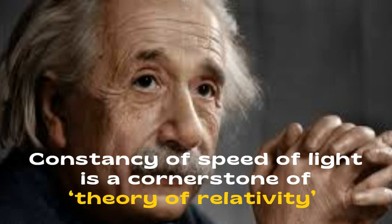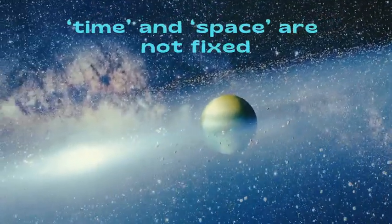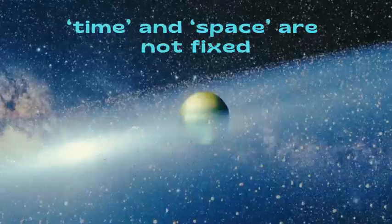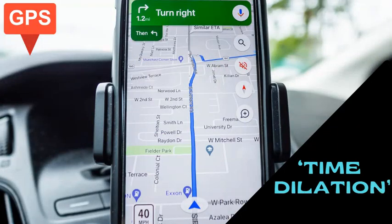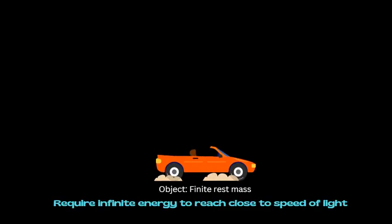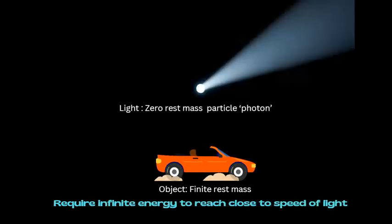This constancy is a cornerstone of theory of relativity and has profound consequences. It means that time and space are not fixed. They adjust to preserve the speed of light. If you are moving faster, time slows down for you and distances shrink. This effect, known as time dilation, has been experimentally confirmed and forms the basis for technologies like GPS. The speed of light also represents the ultimate speed limit in the universe. Nothing with finite rest mass, however small it is, can reach or exceed this speed because doing so would require infinite energy. Light, being massless, is the only traveler that can achieve this cosmic speed.